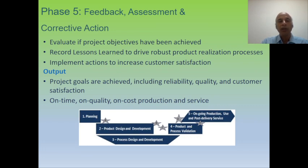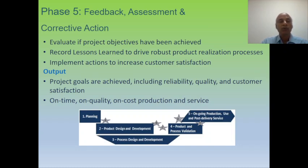Phase five is where we evaluate if project objectives and all KPI parameters have been achieved. We document lessons learned during the earlier phases, drive a robust production realization process, and implement actions to increase customer satisfaction. Outputs from this phase include achievement of project goals — covering reliability, quality, and customer satisfaction — as well as on-time delivery. All customer-related quality, cost, production, and delivery-related targets being achieved is the output of Phase five.